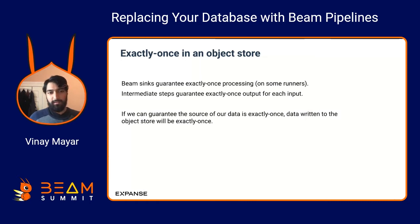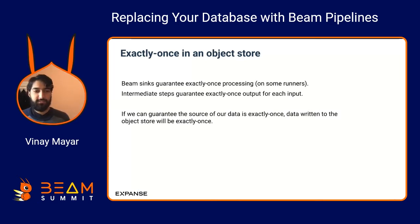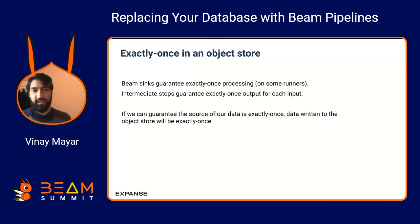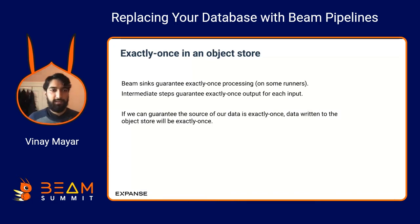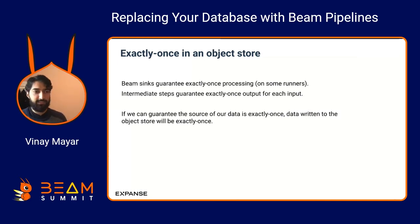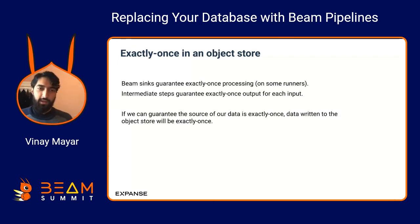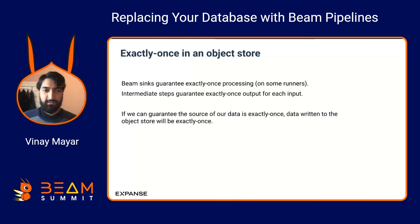If we can use an object store, our solution could be very scalable, extremely cheap — especially if we can compress the data — with minimal ops burden. The first key point: how do we guarantee exactly-once processing? This is something that Beam is really great at. With runners like Dataflow, we can guarantee exactly-once outputs from sinks, and exactly-once output for each input for intermediate steps. As long as we're not relying on side effects of transforms, and our input data is exactly-once, we can make sure data written to the object store is mostly exactly-once.